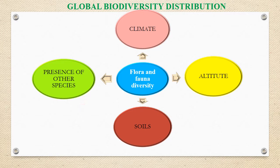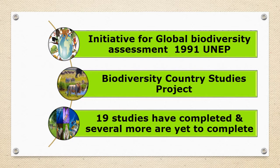Dear friends, the biodiversity at global level is not easy to present or to give exact figures of all levels of life forms. For making better understanding of the status of biodiversity at global level, various initiatives had been undertaken from time to time. The initiative for biodiversity assessment was taken long back in 1991 with the United Nations environmental protections. Biodiversity country studies projects consisting of bilateral and global environmental facility funded studies in developing countries were implemented in cooperation with donor countries and the United Nations Development Program.